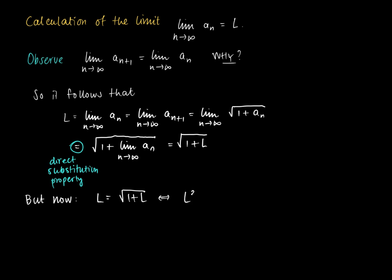So squaring left and right, we see that L² equals 1 plus L. But also we know that L should be larger than 0, right? We can only do this if L is larger than 0. So we solve for the quadratic equation. L² minus L minus 1 equals 0. And L should be at least 0.